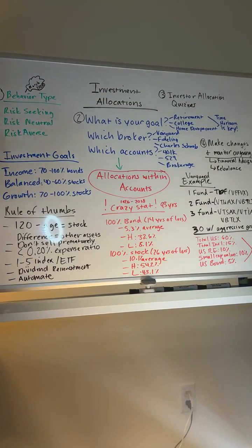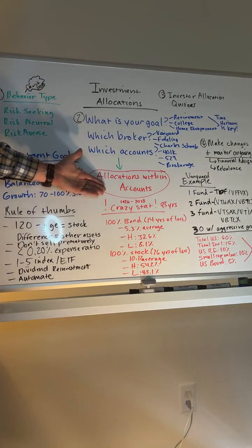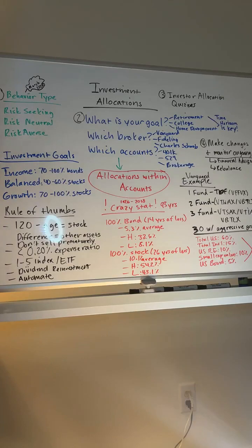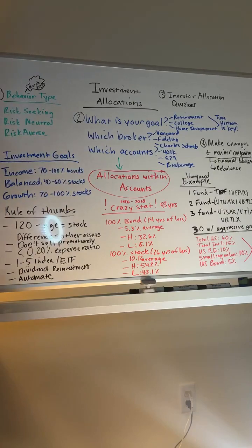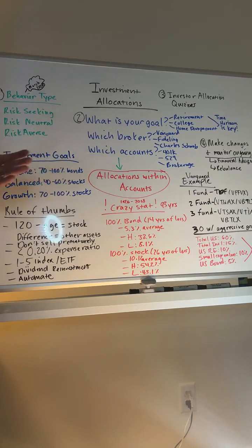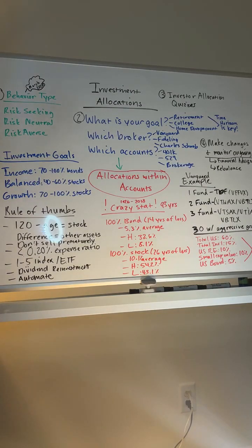Once you've selected your account, you have to actually select your investments within it. For example, if you're contributing $500 a month to your IRA, where is that $500 going inside the account? If you don't select investments, it defaults to cash — literally the same as a bank account. You're not actually investing. You have to designate exactly where those allocations go.